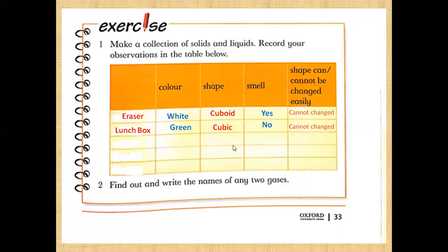These two — razor and lunch box — are examples of solid. Now next is a bottle. Is it solid or liquid? It is solid. The color of the bottle is red and its shape is cylindrical, meaning round. The bottle has no smell and it cannot change its shape.